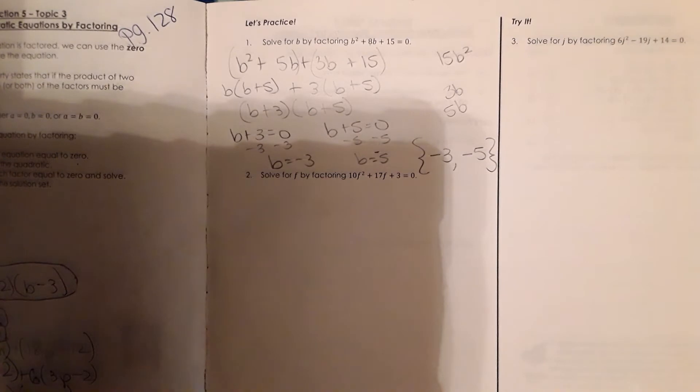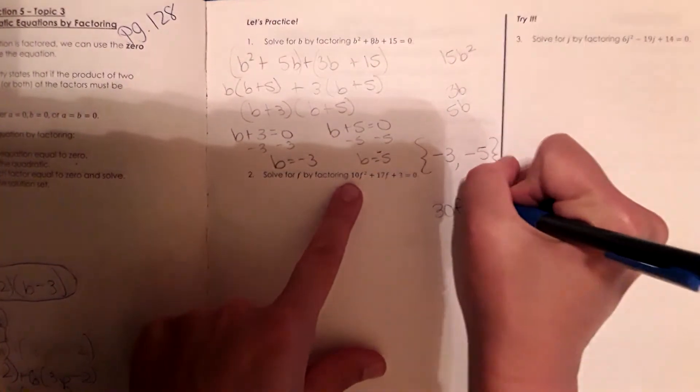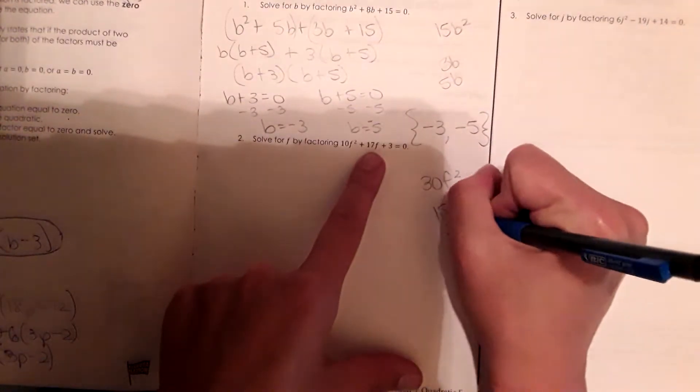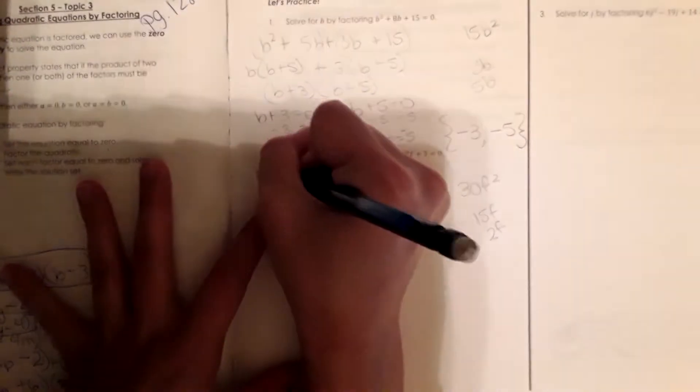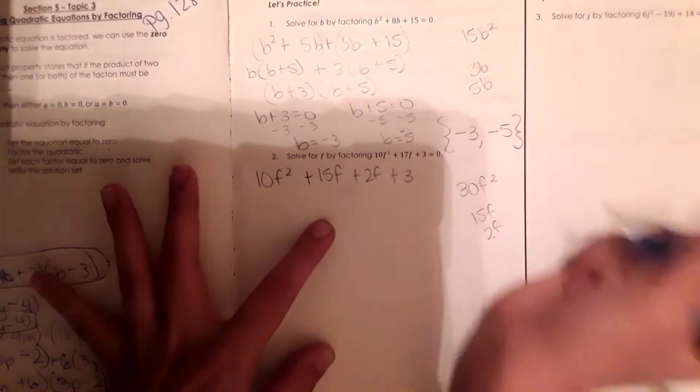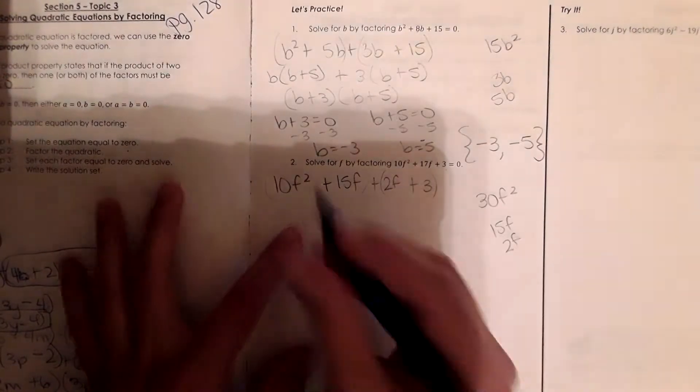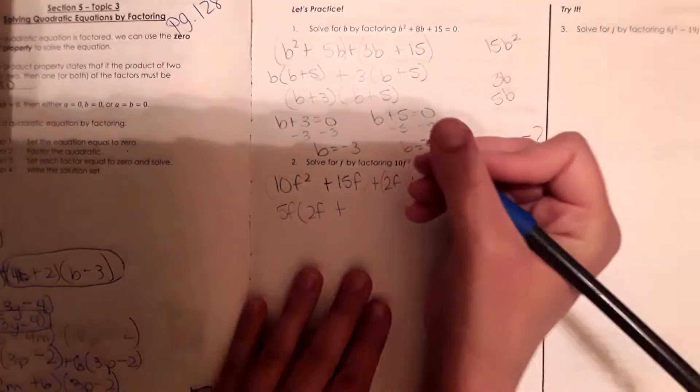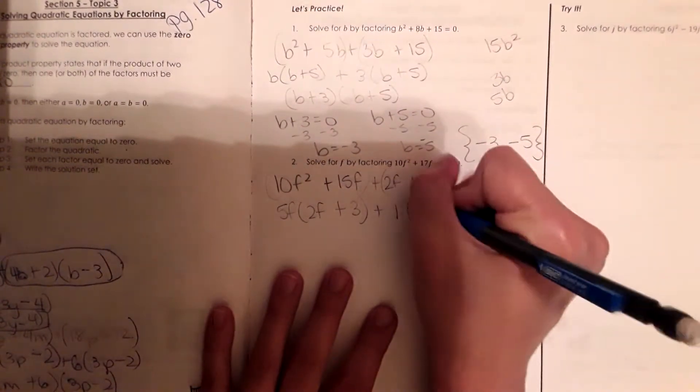Okay and moving on to the next one. Same thing as before, we're going to multiply the first and last term to get 30f squared. We need two numbers that multiply to this that add to 17 like 15f and 2f. Multiply to 30 and add to 17. So now I'm going to have 10f squared plus 15f plus 2f plus 3. Okay group it. I'm going to pull out the greatest common factor. In this case it is 5f and I get 2f plus 3. And then here I can't pull out any factors so we're just going to use 1, 2f plus 3.